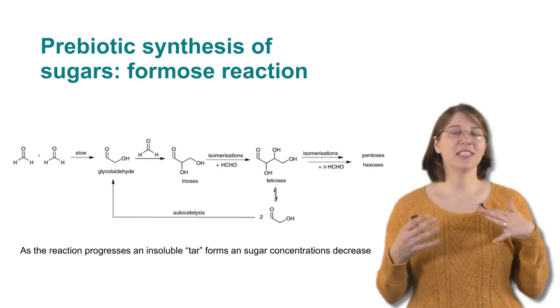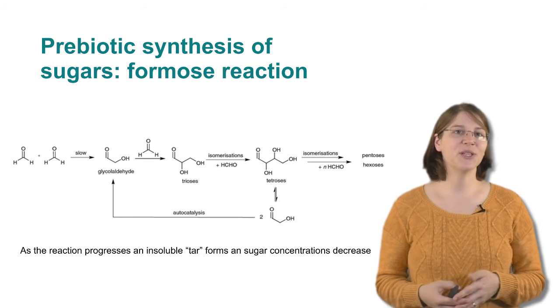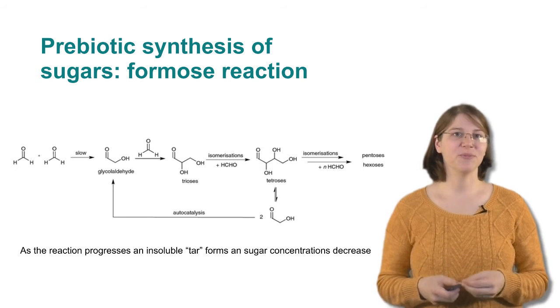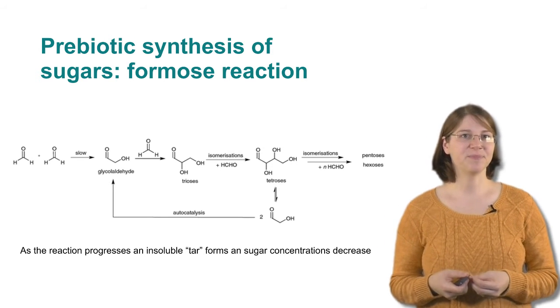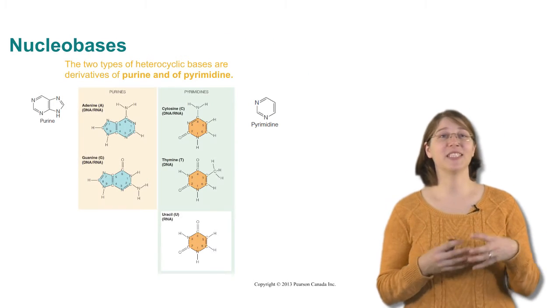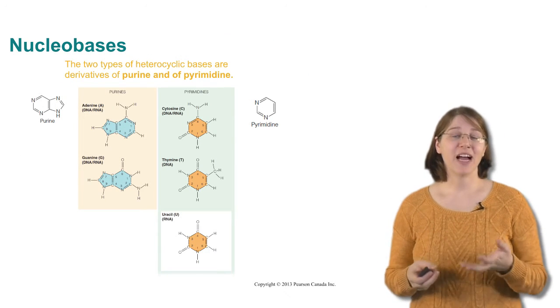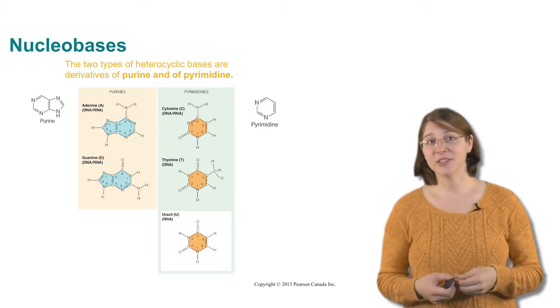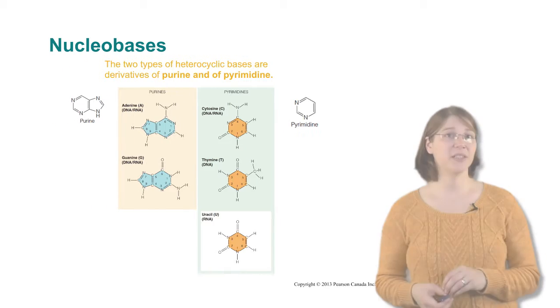And this process, if you let it react further, will turn into something that looks like tar, kind of like what you would end up with if you overcooked your caramel. Once we have synthesized our five and six carbon sugars on early earth, then we can start to build nucleic acids, which are our second type of macromolecule.